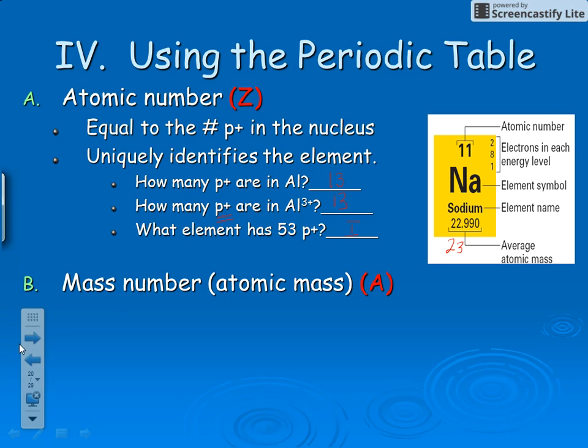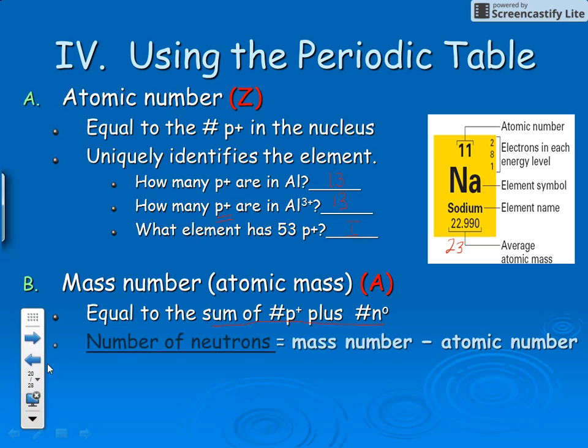The mass number is equal to the sum of the protons plus the neutrons - both particles found in the nucleus. If you want to find the number of neutrons in an atom, take the mass number and subtract the atomic number.